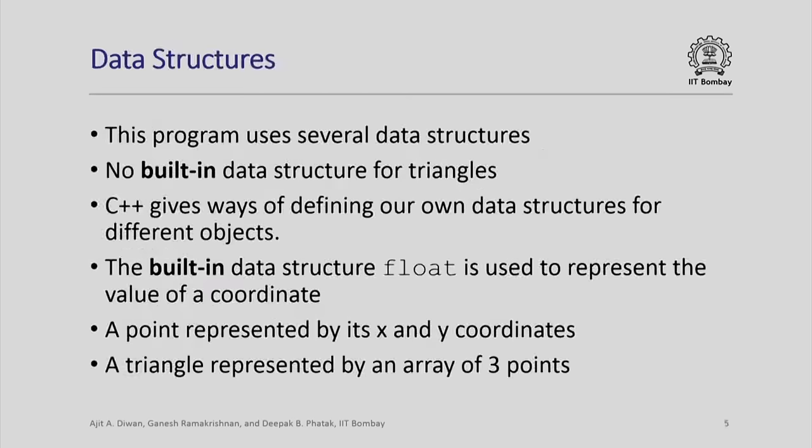Let us look at this program again. There are several data structures used here. There is no built-in data structure for triangles, so we defined a type called triangle, which in turn requires us to define a type called point. A point itself is represented by two coordinates, and the coordinates can be represented by a built-in type called float which represents real numbers. We are building more and more complicated types from what is available, and the more complex programs you write, the more complicated such structures you will need to build up.